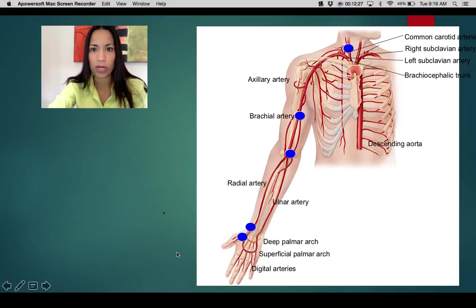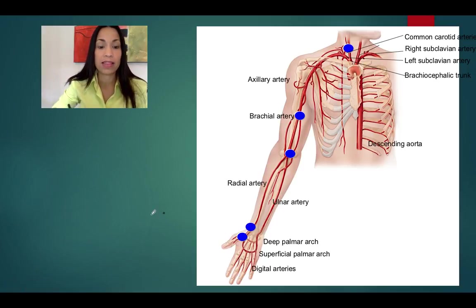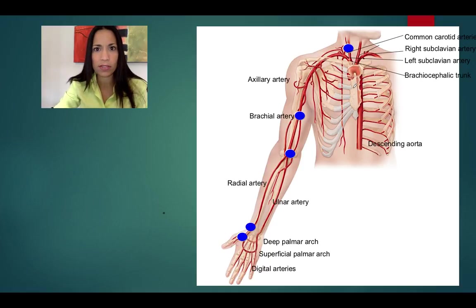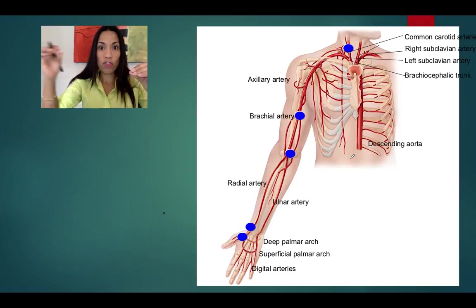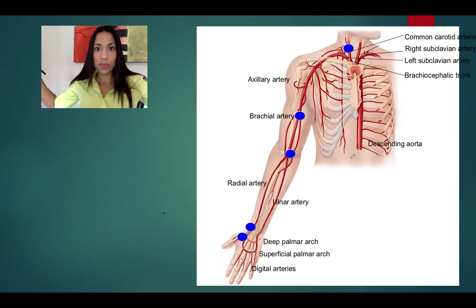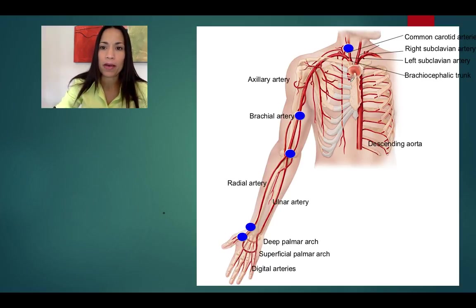That covers the upper limb. Next we'll describe the irrigation of the lower limbs, but I don't want to skip over the rest of the body without acknowledging it. We have millions of blood vessels supplying every single organ and tissue. If you lined up all your blood vessels end to end, you could wrap the entire planet two and a half times — that's how many blood vessels we have.